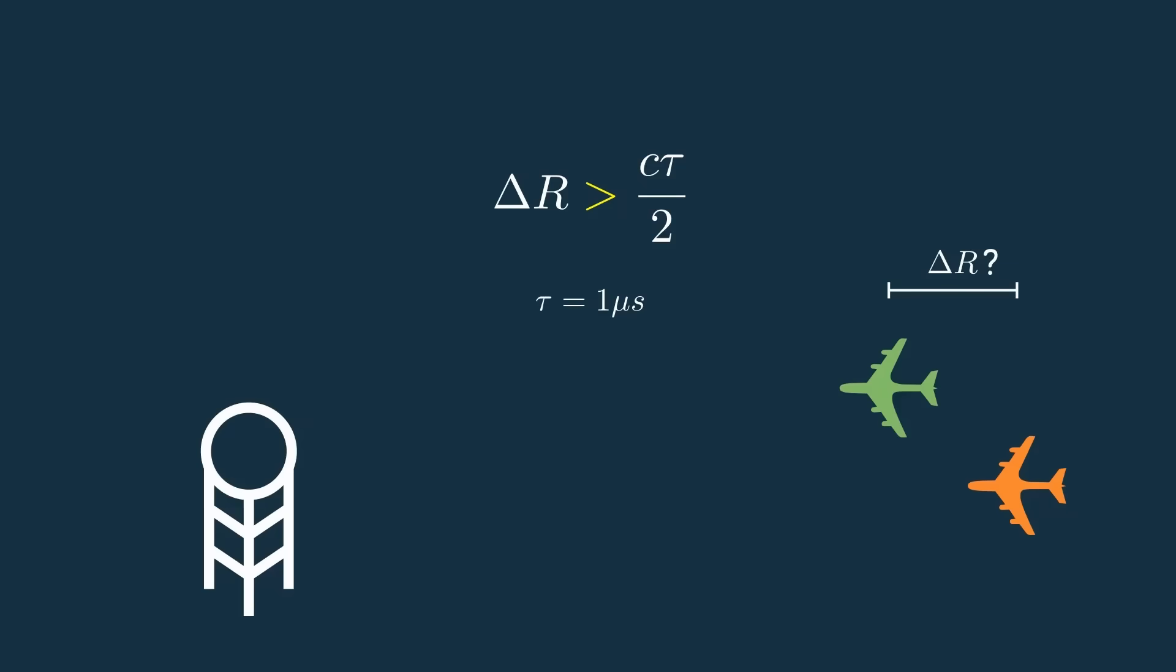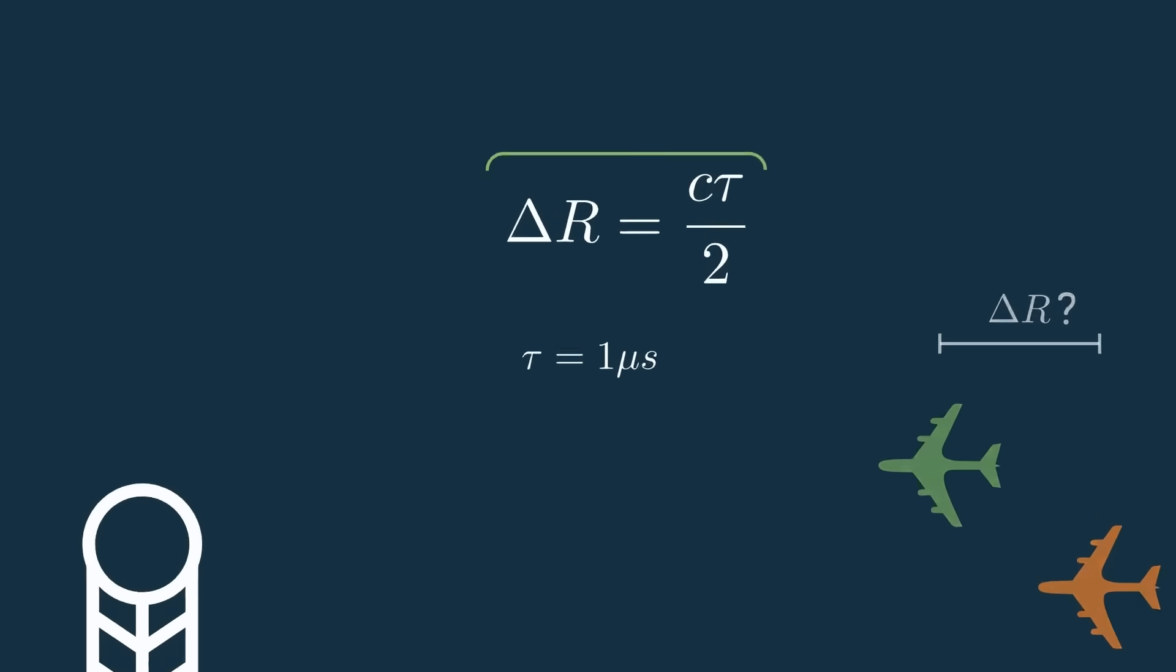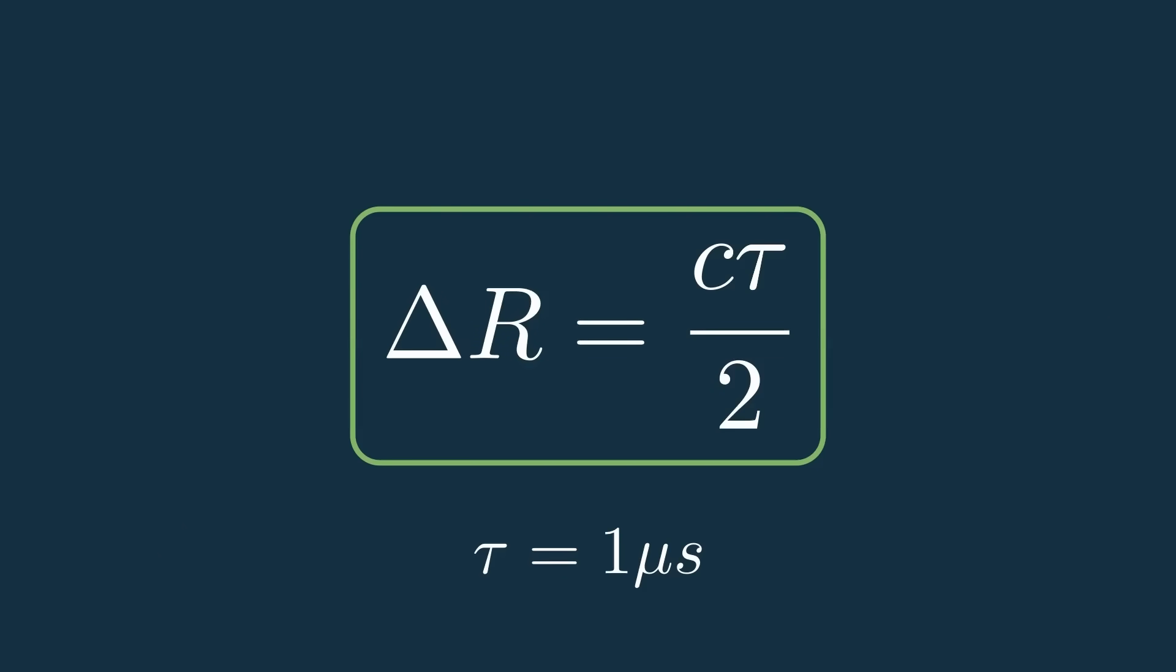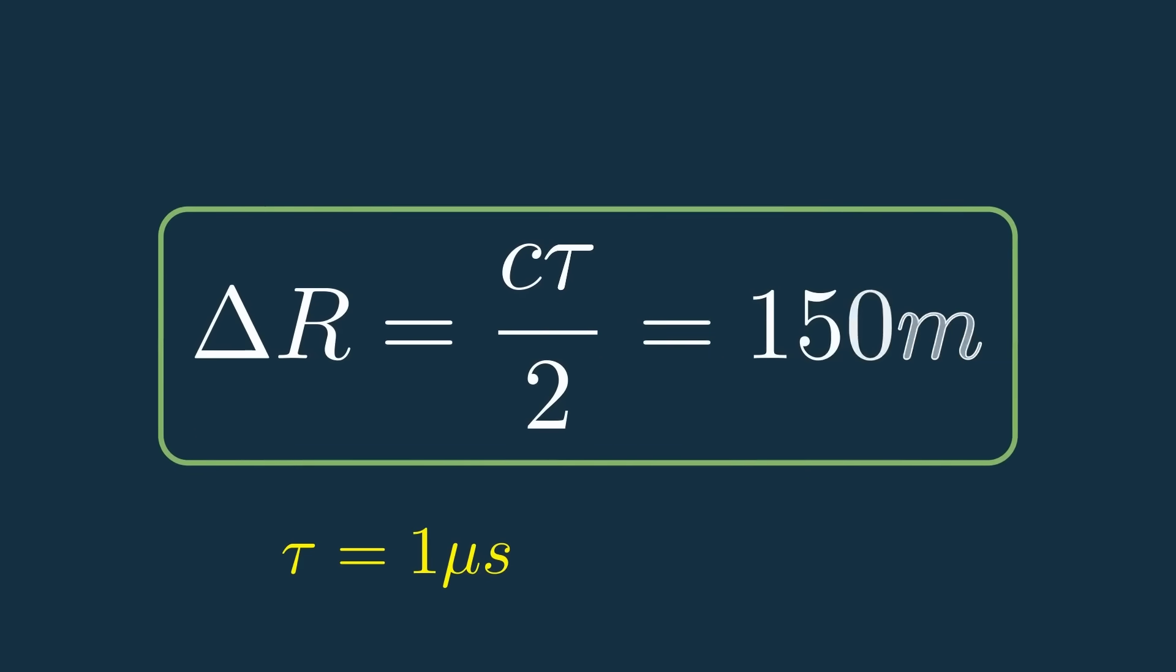Really though, we say that the range resolution is equal to c tau over 2, because it's the minimum range delta that we can detect. What's cool is it's literally only reliant on the pulse width, so if we plug in this tau equals 1 microsecond that's been sitting here, we find that the range resolution is 150 meters.